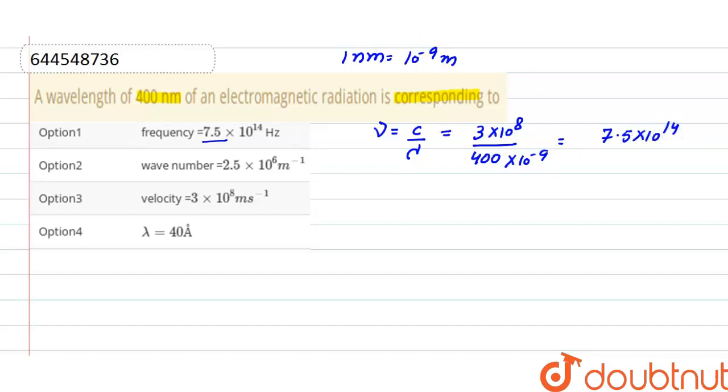Next is wave number. As wavelength is equals to 1 divided by wave number, so wave number here will be 1 divided by lambda, and lambda is 400 nanometer. So 400 into 10 raised to the power minus 9.